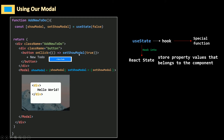You might ask why we don't just create a variable using let and set showModal directly to false, then change it when we want. But if you do that, you won't get all the features React state gives you. When you use React state, showModal belongs to the component, and whenever it changes it will cause our component to re-render. If you use a simple let variable, changing it won't re-render the component. We really need a re-render when showModal changes — from false to true — so the new value gets sent to our modal to hide or show it. That's why we need useState.